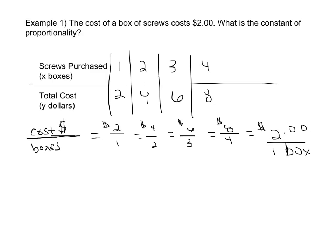Now if we simplify any of these ratios, we are going to get $2 per box, or 2 to 1. So then our constant of proportionality is going to be $2, or 2 to 1.